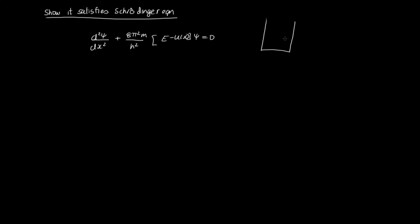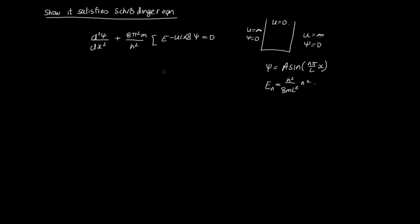Outside the well, U is infinite and ψ is 0. Inside the well, U equals 0, and we're showing that ψ = A sin(nπ/L · x) is a solution. We also know that inside the well, the allowed energies E_n are equal to h²/(8mL²) × n².